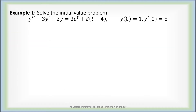So let's see how that can help us solve differential equations by solving the initial value problem: y double prime minus 3y prime plus 2y equals 3e to the t plus an impulse at time 4. The initial values are y of 0 is 1 and y prime of 0 is 8.